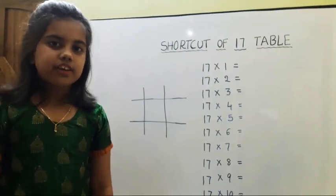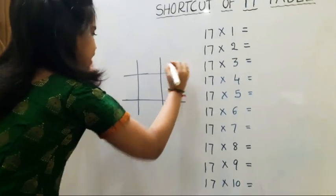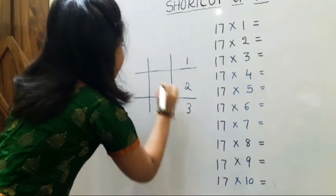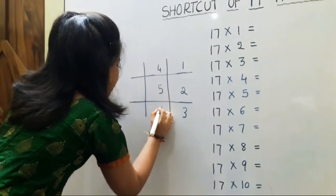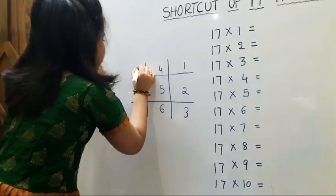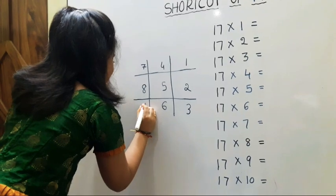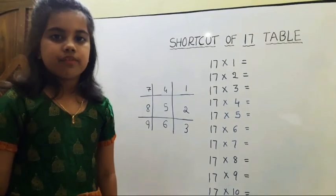First we should write 1 to 9 numbers in this order: 1, 2, 3, 4, 5, 6, 7, 8, 9. Then we should write odd numbers from 1.